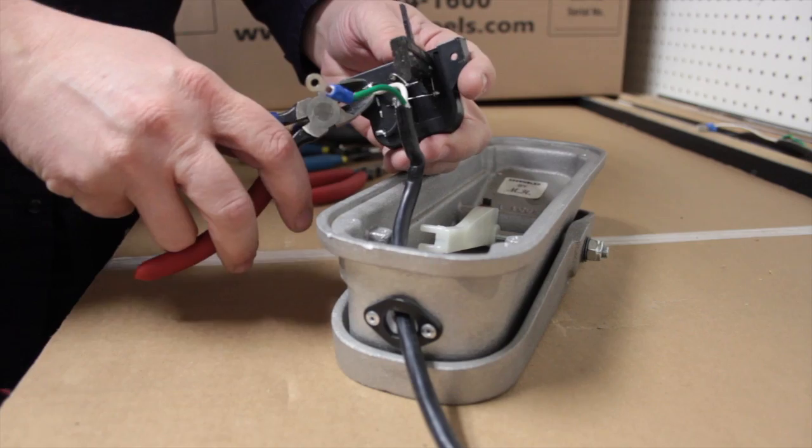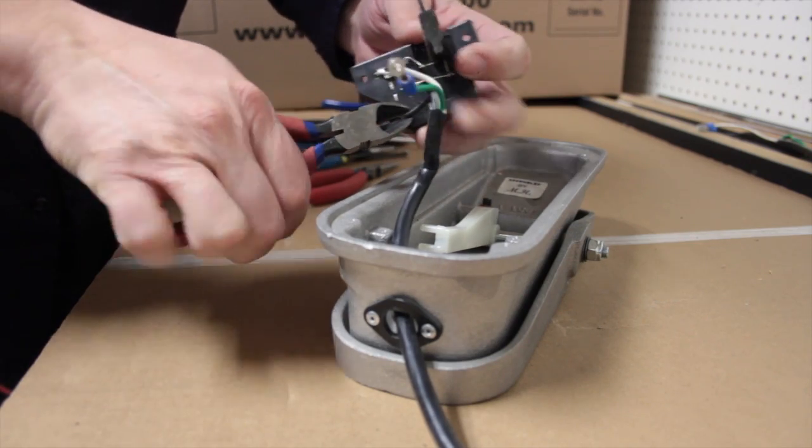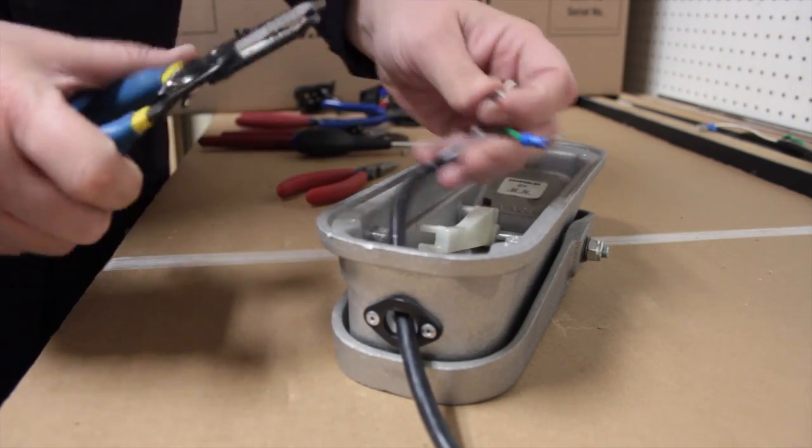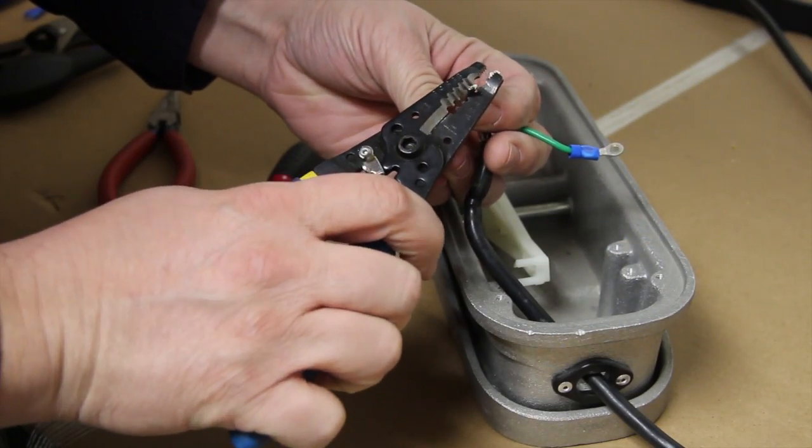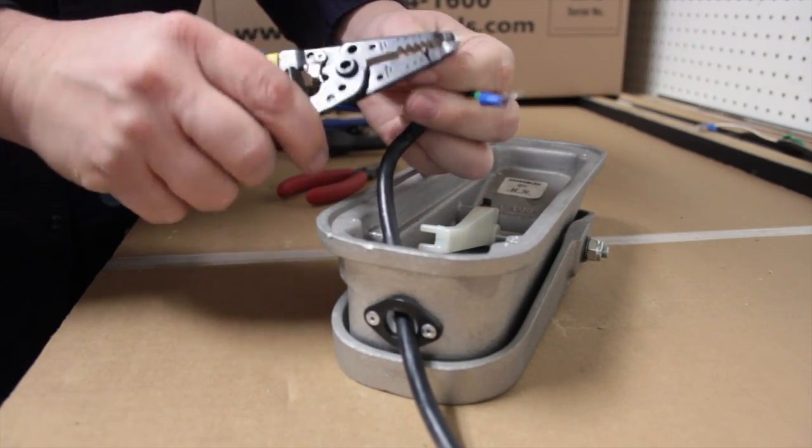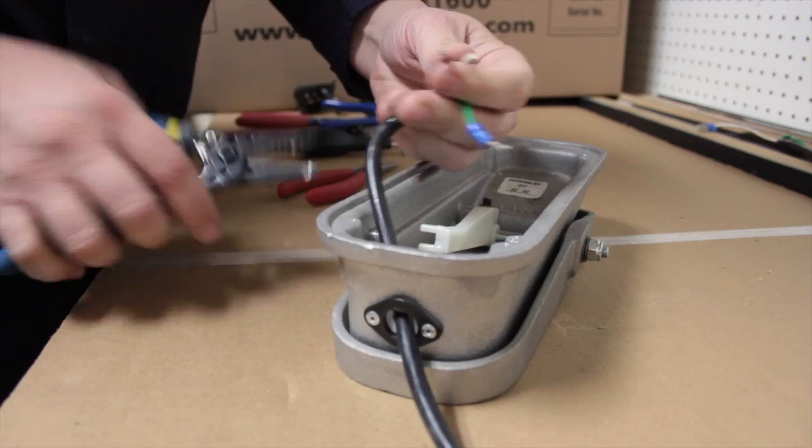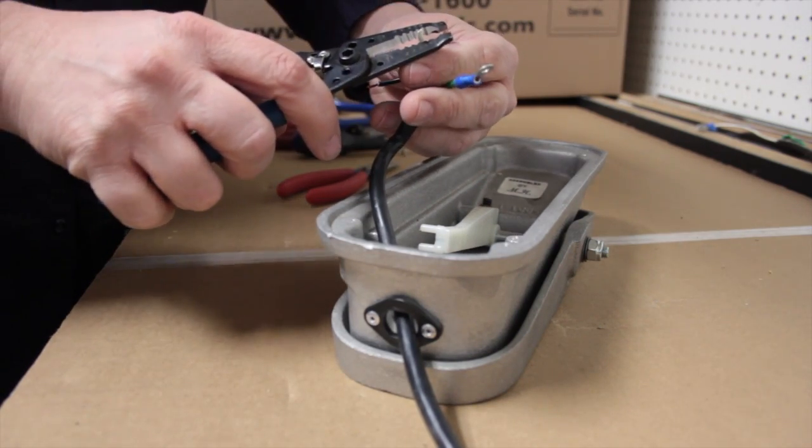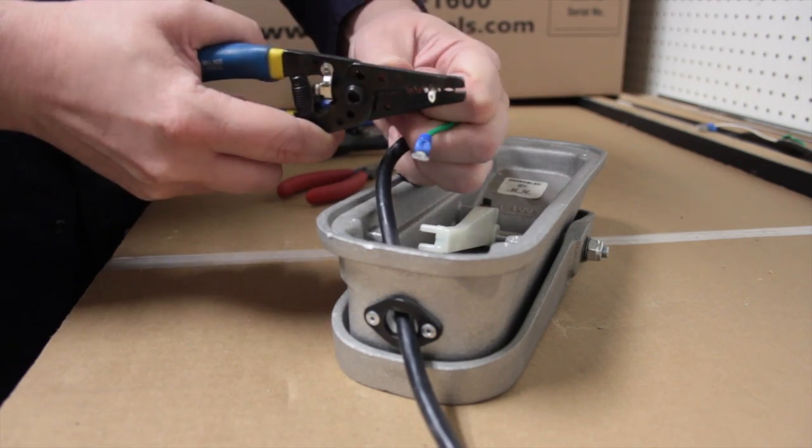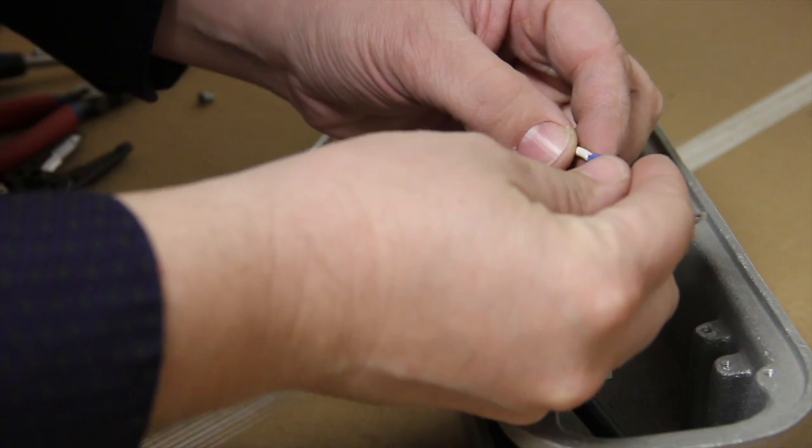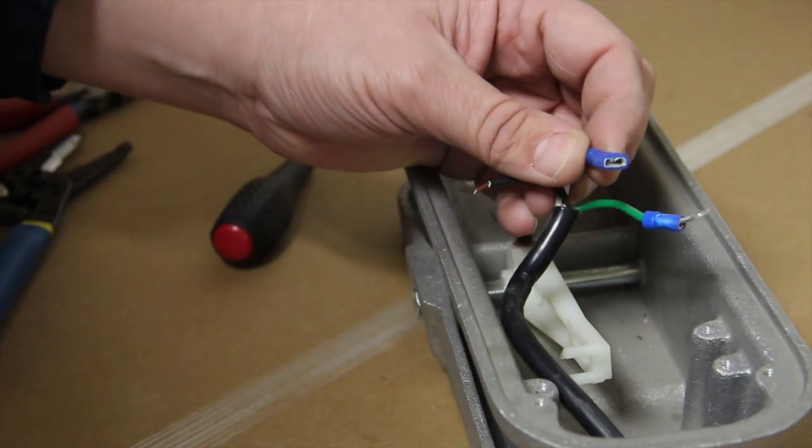We're going to snip these wires off. We'll use our wire strippers. Some people use a pocket knife, we prefer the strippers. You can get these at any hardware store. Good thing to have around. Once we have these stripped we'll give it a little twist and install the connector.